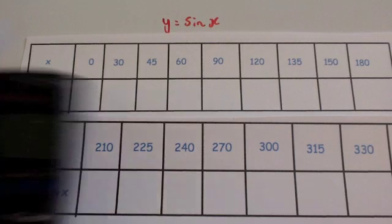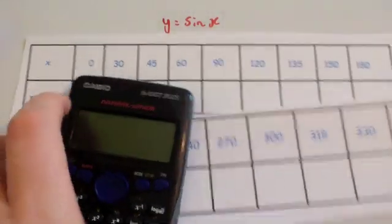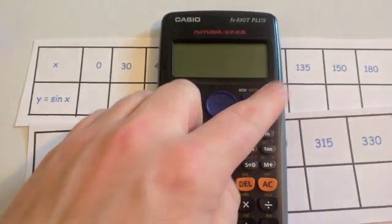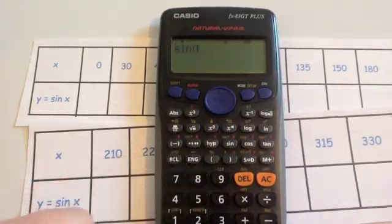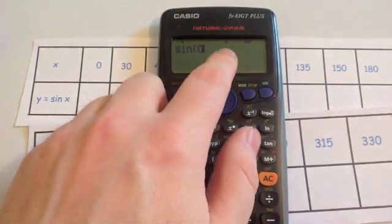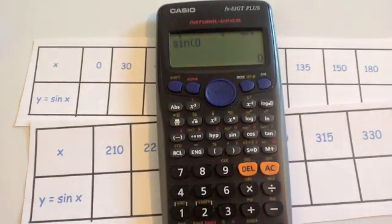So on your calculator, get your calculator. Let's work out some of these angles. So let's work out the sine of 0. Turn on your calculator and do the sine of 0. Make sure your calculator at the top, make sure it's in degrees mode. So then that would be 0.